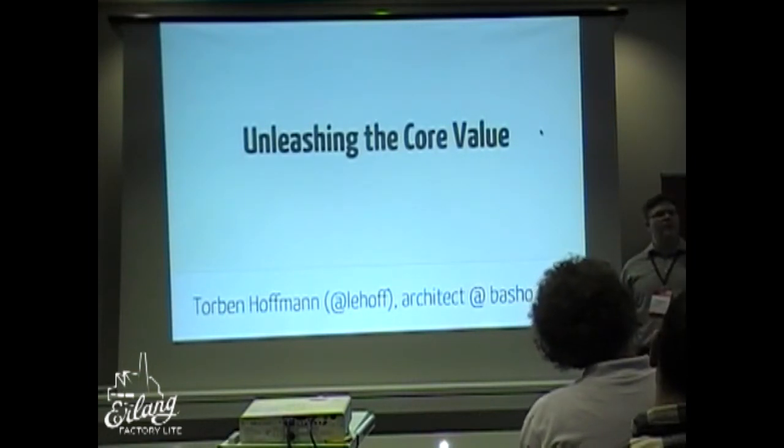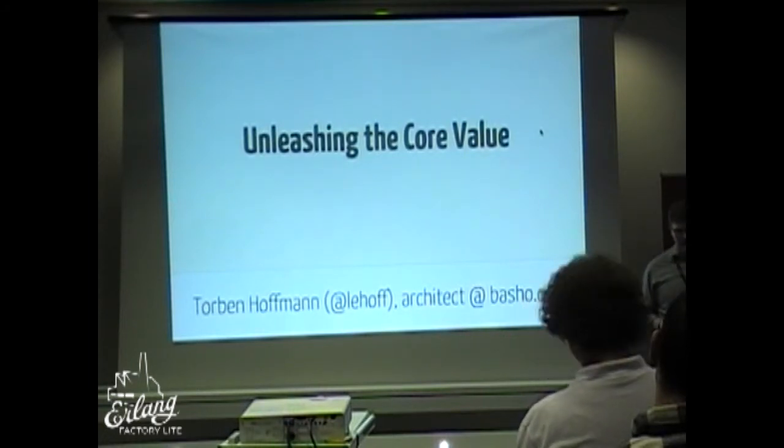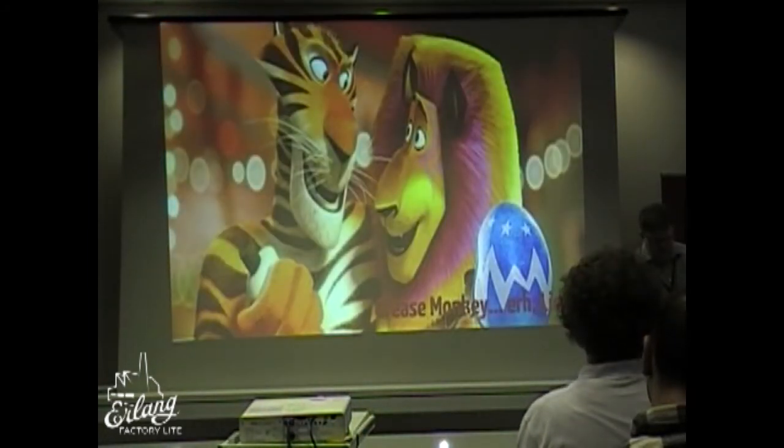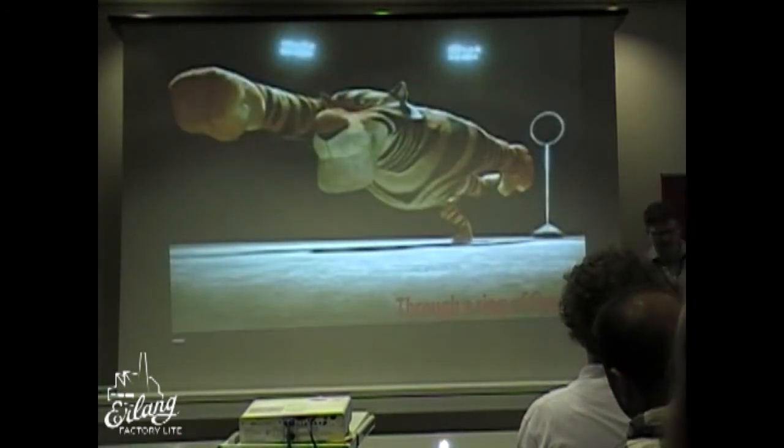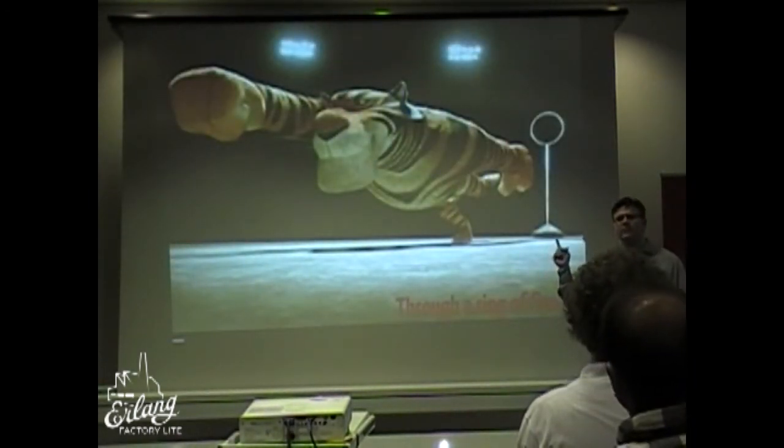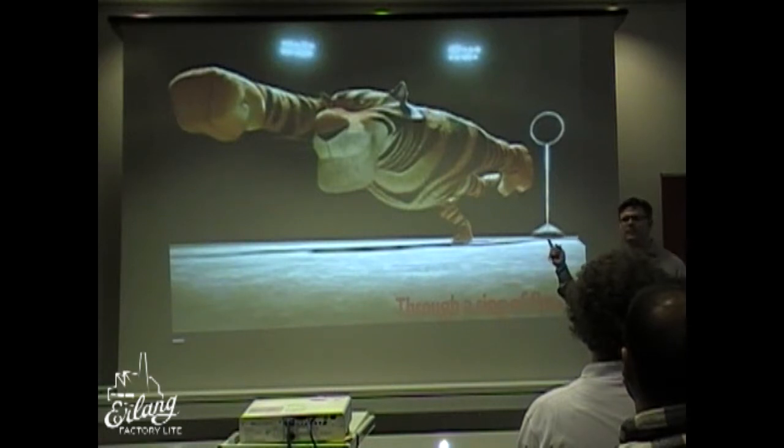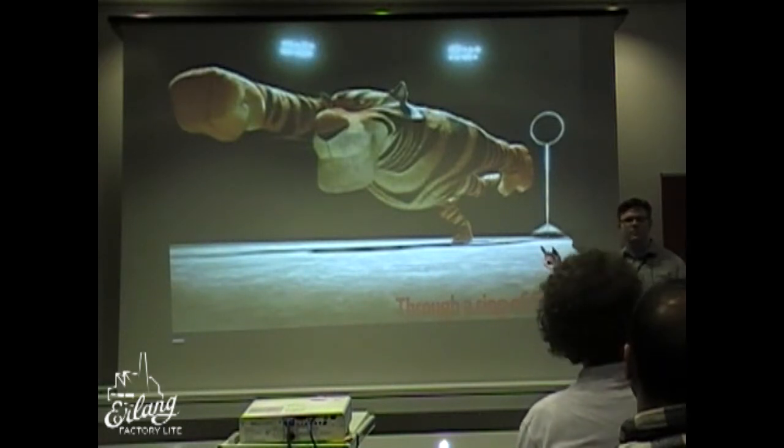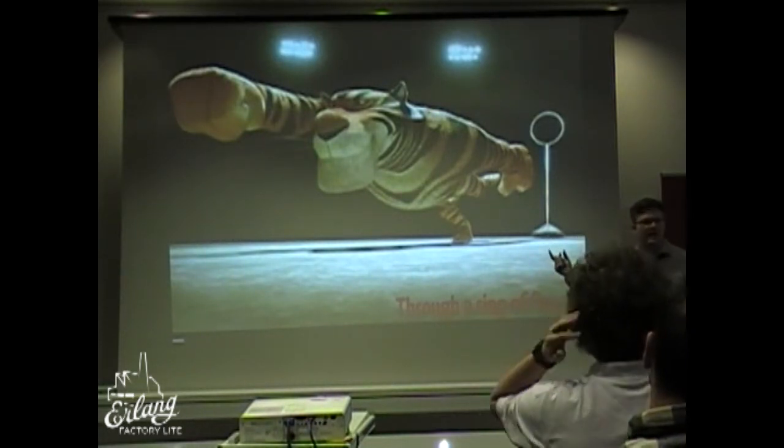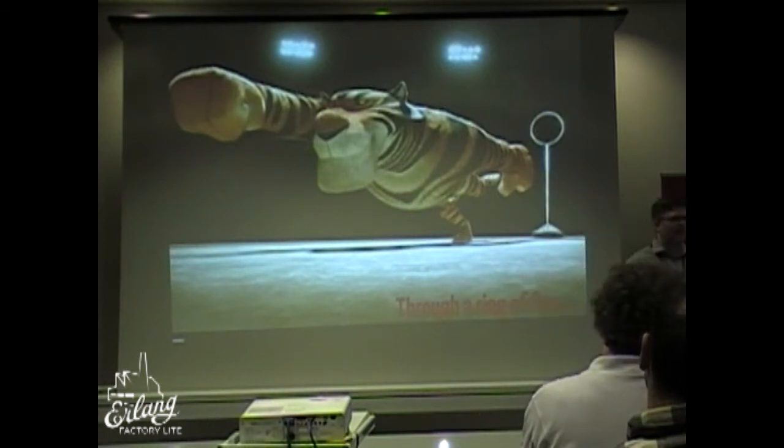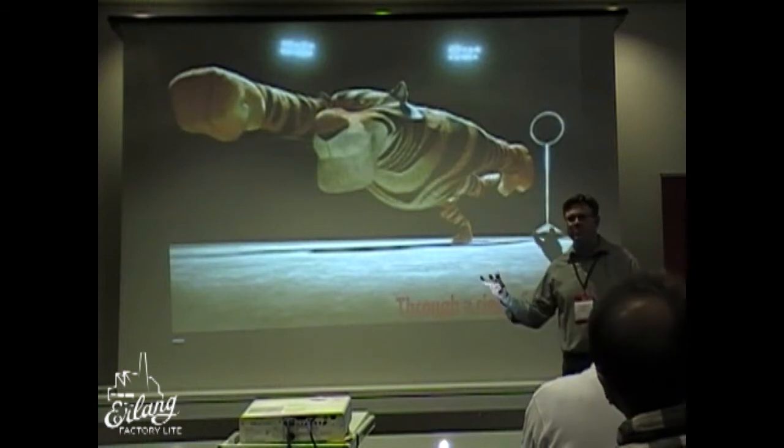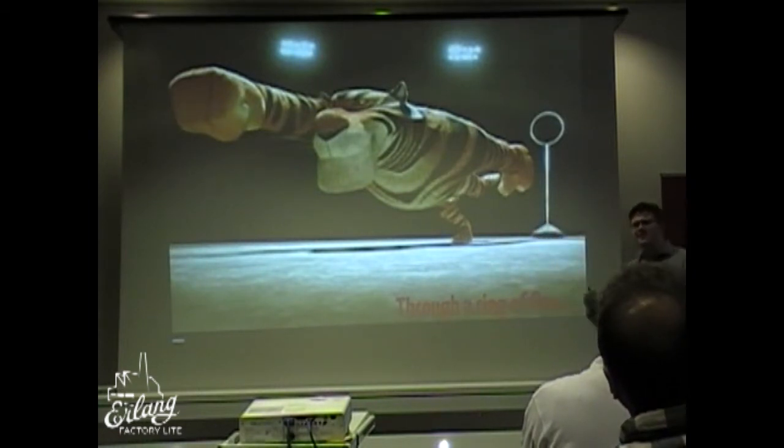So I looked around, how are other people using Riak Core? Because they're using it. And it turns out what they do is, just like this tiger living in a circus, he jumps through a ring of fire. It's quite difficult, it's painful, but you do it because it's a living. And this is what people are doing when they're using Riak Core - they're jumping through a ring of fire.